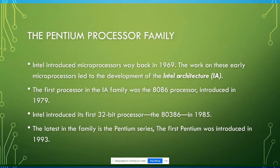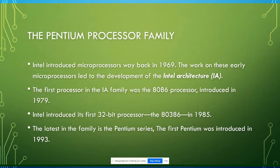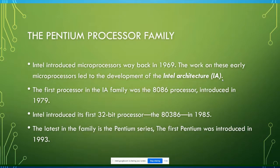The Pentium processor is not just one single processor — it's actually a series of processors. It started very early; the first types of microprocessor were introduced in 1969. Intel updated their microprocessor every single year and launched new types of processors. Intel has their own architecture for how they design and develop their processors, and it is called Intel Architecture, or IA in short. Please remember this name — wherever you see IA, it means Intel Architecture.